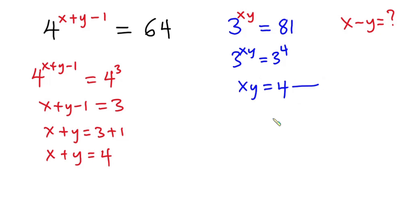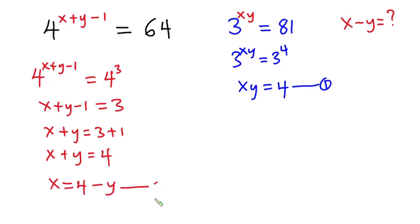I'll call this equation 1. Now from equation 1, I'm going to make x the subject, so we have x is equal to 4 minus y. I'll call this equation 2.